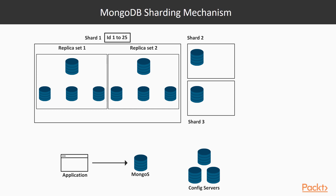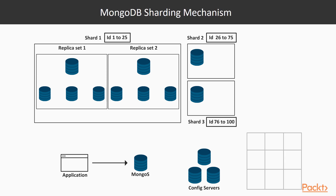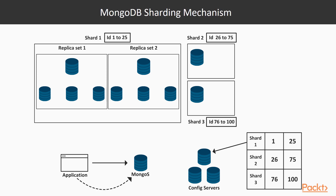Shard 1 has data from employee ID 1 to 25, shard 2 has data from employee ID 26 to 75, and shard 3 has data from employee ID 76 to 100. This information is maintained in the config servers. Whenever any read or write operation happens, it is directed first to the mongos, which takes the location of the data from the config servers and internally redirects the application server's request to either shard 1, shard 2, or whichever shard holds the relevant data.